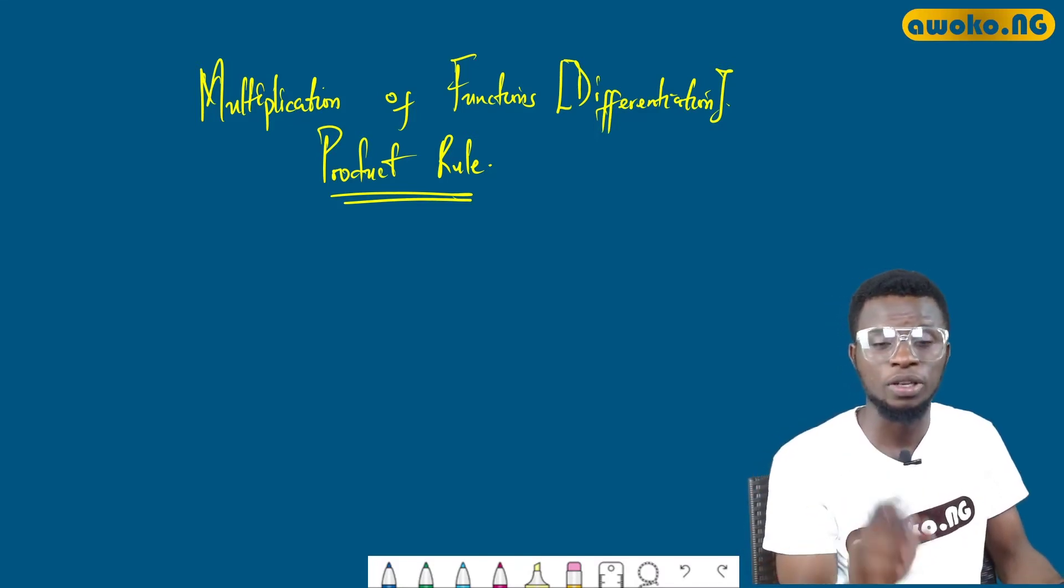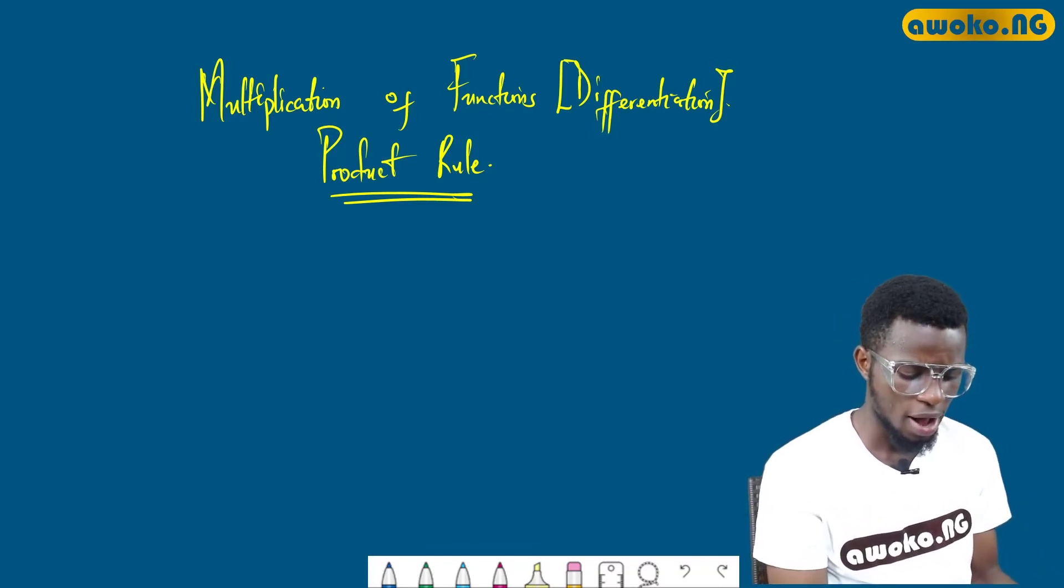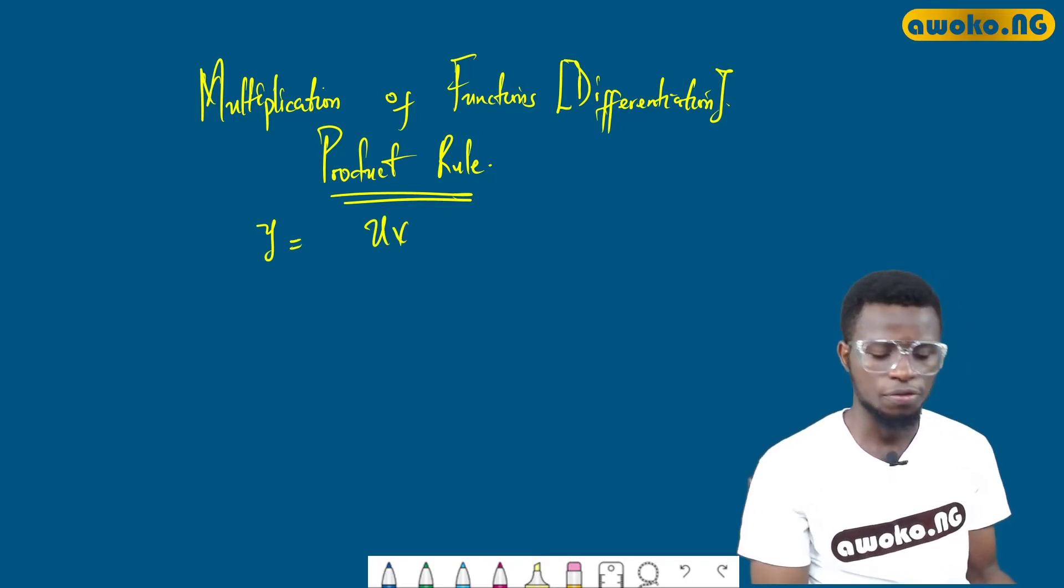How do we go about this? I'm going to first discuss it from the first principles. Let us say we have the function y equals uv, where u and v are functions of x.